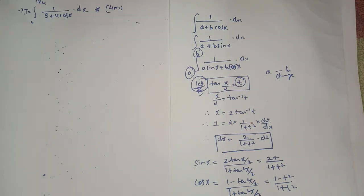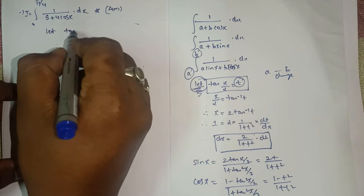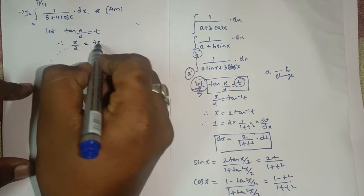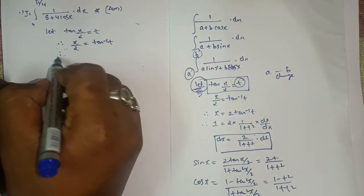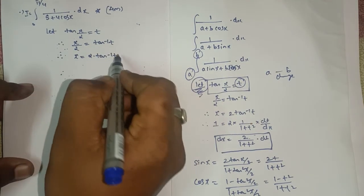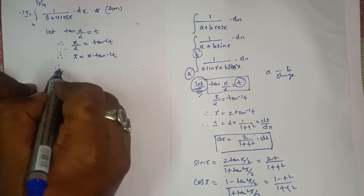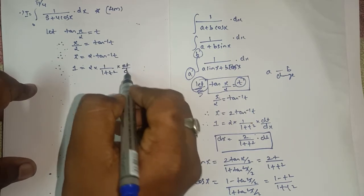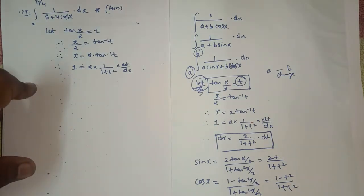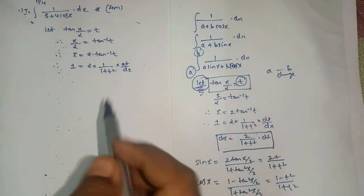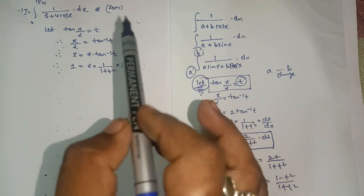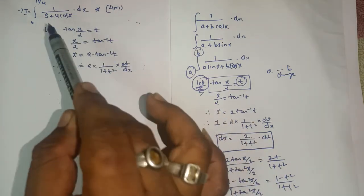Whenever in any question you are dealing with a 'let' substitution, see to it that the limit will change, and then only solve your sum. Let's begin and see how to tackle this sum. As I said, this is one of the most important sums from Exercise 2 — there are three or four very important sums from a board exam point of view. So we start with: let tan(x/2) = t, therefore x = 2·tan⁻¹(t).